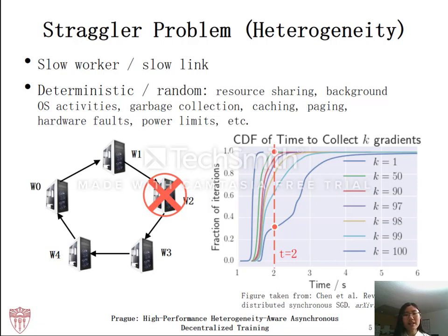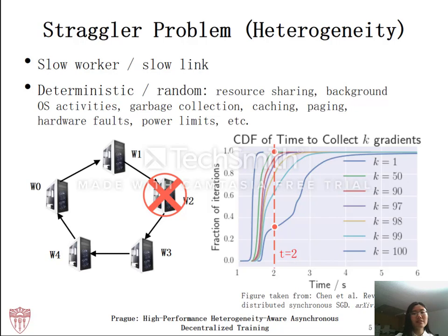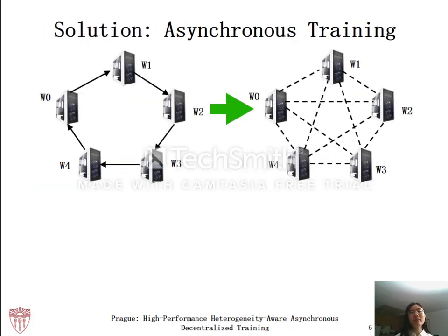When random heterogeneity like this occurs, the performance of synchronous algorithms like allreduce will be limited by the slowest worker, because all workers are required to participate in the synchronization. This is far from ideal. To deal with stragglers, the solution is asynchronous training, which means not all workers need to participate in the synchronization.